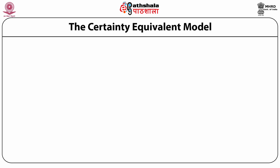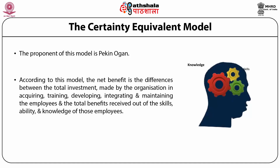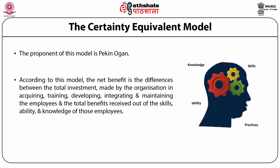Certainty equivalent model. The proponents of this model are Peck and Ogun. The two major components of this method are the net benefit and the certainty factor, which provide the means for determining the net present value of human resource. According to this model, the net benefit is the difference between the total investment made by the organization in acquiring, training, developing, integrating and maintaining the employees, and the total benefits received out of the skills, abilities and knowledge of those employees.